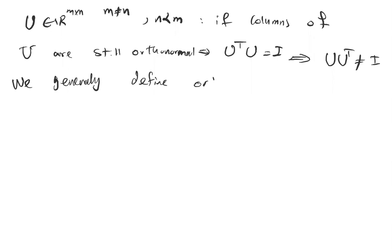For now, we generally define orthogonal matrices for square matrices. So when we talk about a matrix being orthogonal, we refer to square matrices.